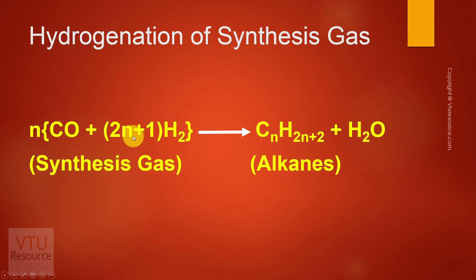n{CO + (2n+1)H2}, that is synthesis gas, is hydrogenated to obtain alkanes CnH2n+2. Alkanes, that is petrol, ranges from C5 to C7. It might be pentane, hexane, or heptane. The byproduct is water.